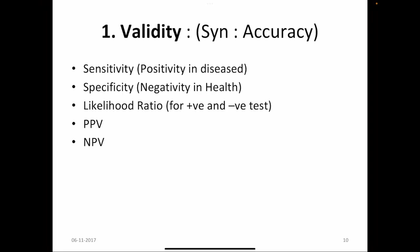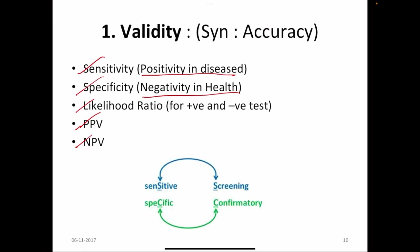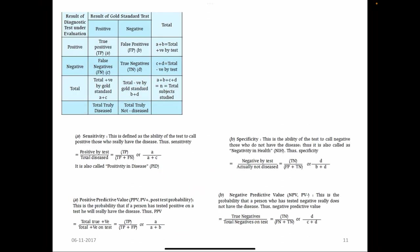Validity or accuracy is measured by sensitivity, specificity, likelihood ratio (positive and negative), positive predictive value, and negative predictive value. Sensitivity can be remembered with the phrase 'positivity among the diseased and negativity in the healthy.' If the test is sensitive then it is a good screening test. If the test has good specificity then it can be used as a confirmatory test. Remember by the fourth letter — sensitivity for screening, specificity for confirmatory test.